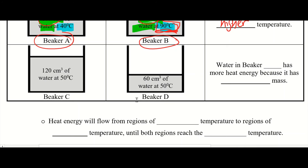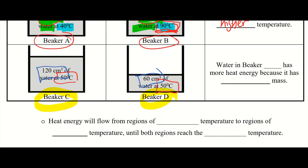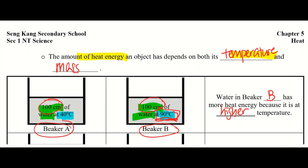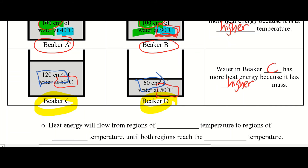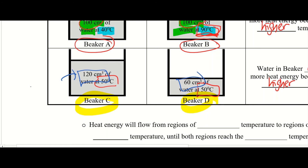Moving on — beakers C and D: both are at the same temperature, 50 degrees Celsius, but beaker C has more water than beaker D. Which one has more heat energy? Clearly it must be the water in beaker C, because it has higher mass — more amount of water. So the amount of heat energy also depends on the mass of the object. The more water there is, the higher the mass, and the more heat energy it contains.